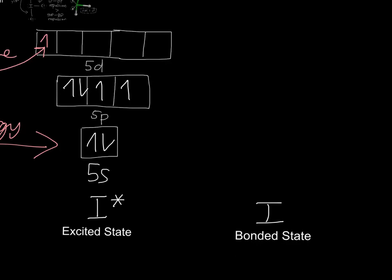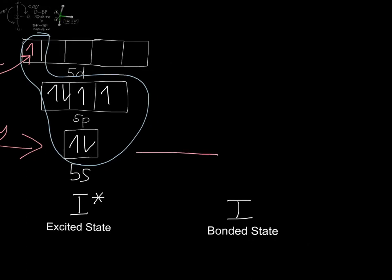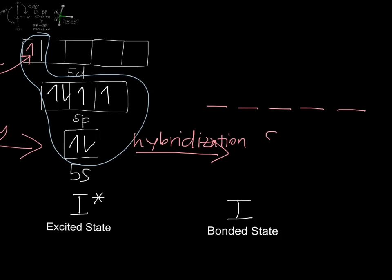After adding the remaining electrons from the ground state to the excited state, we will hybridize these electrons in their respective orbitals in their bonded state. So we would circle all of the electrons that will be hybridized. We would then show this process by drawing an arrow and writing hybridization, and then showing the sp3d orbital. From here, we would then draw our electrons. That is the s orbital, that is the 5p orbital, and this is the 5d orbital.